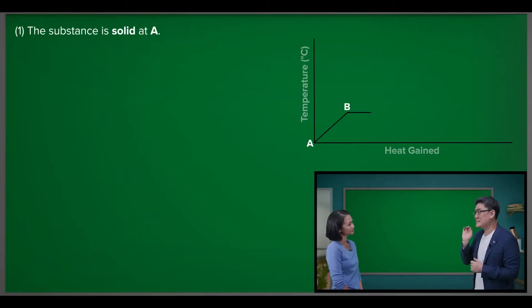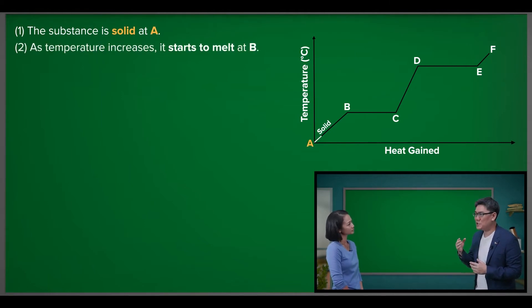That's right. To illustrate this more clearly, let's take a look at this heating curve. The substance is a solid at A. As temperature increases, it starts to melt at B.